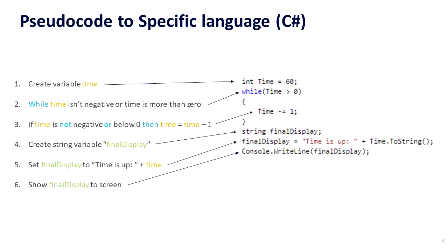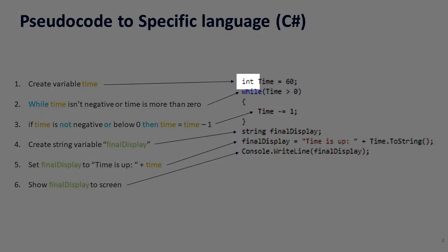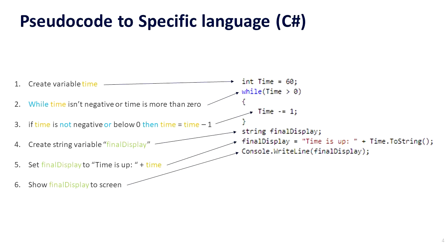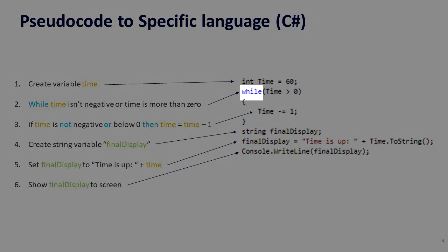And to the right is C sharp. The first language is C sharp. Int is an integer, so we create an integer called time and we assign it 60. Then we do an iteration loop while time is more than zero. If so, we take away one from the variable time.